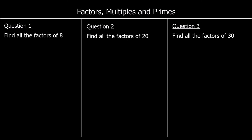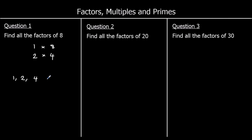Question 1: find all the factors of 8. So we've got 1 times 8, and it's in the 2 times table: 2 times 4. There are no other ones. So we've got 1, 2, 4, and 8.